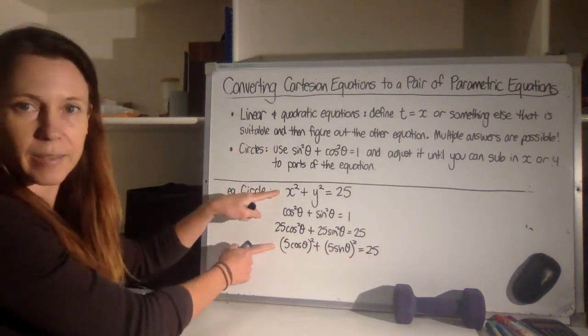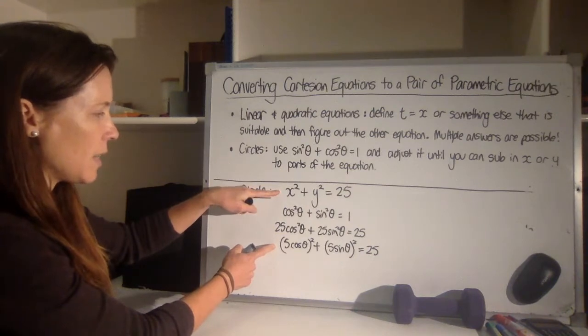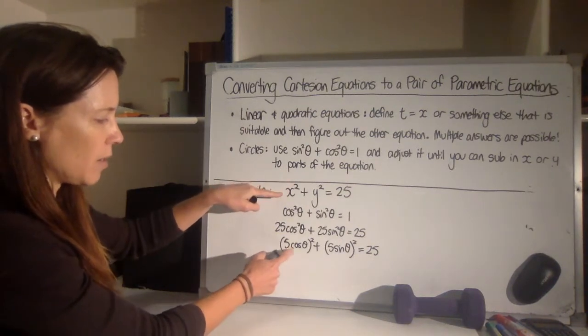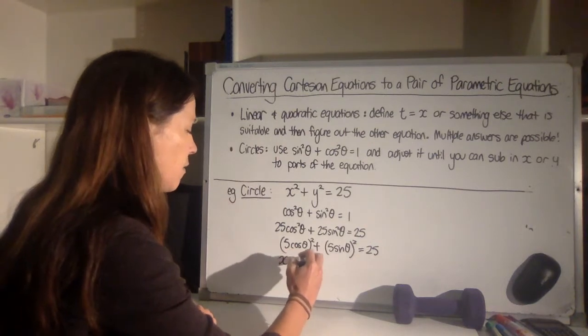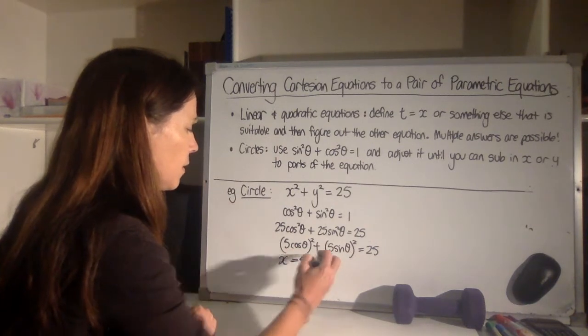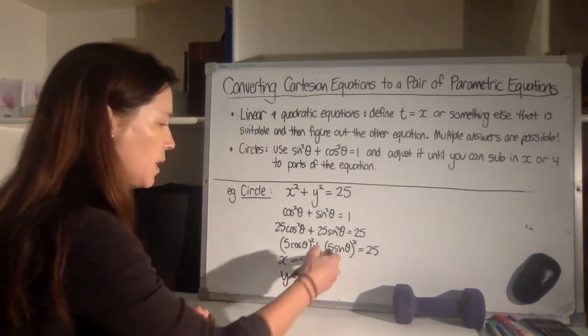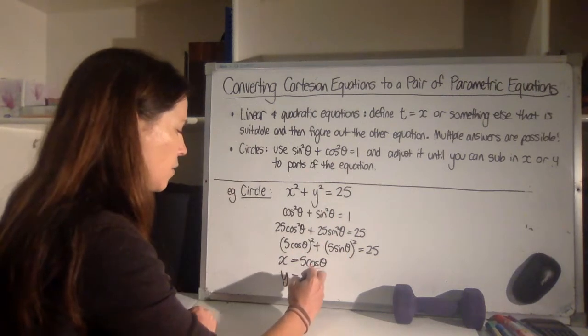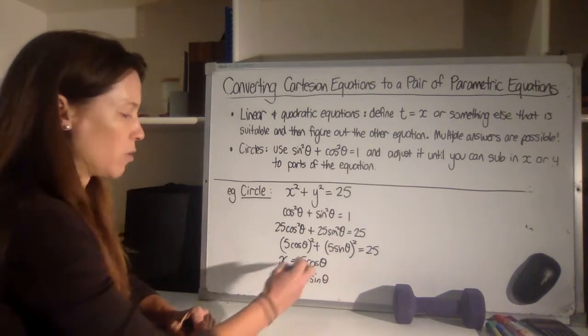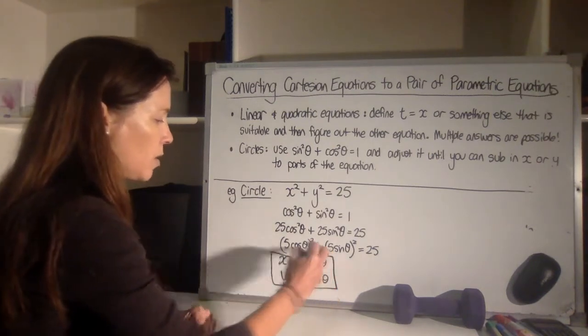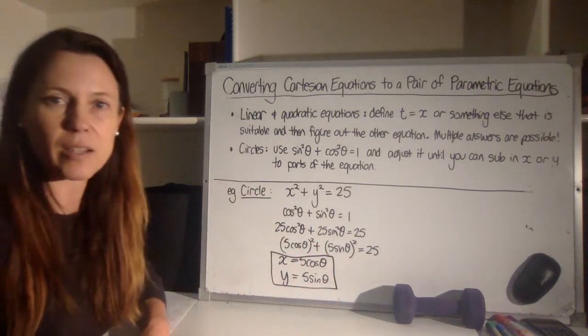Now this is looking a lot like the Cartesian equation that I had except instead of x being squared, I have 5 cos theta so that tells me that x must be 5 cos theta and y must be this part here which is 5 sine theta. And that gives me my pair of parametric equations that will similarly define this Cartesian equation.